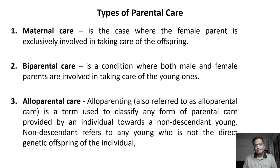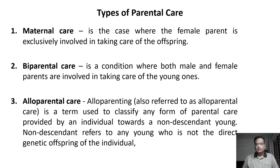First let us see some types of parental care. Maternal care, also called uniparental care, is parental care where only one parent is involved in taking care of the young ones — either male or female. If it is the female, it is called maternal care. So maternal care is the case where the female parent is exclusively involved in caring for the offspring and the male is not involved at all.